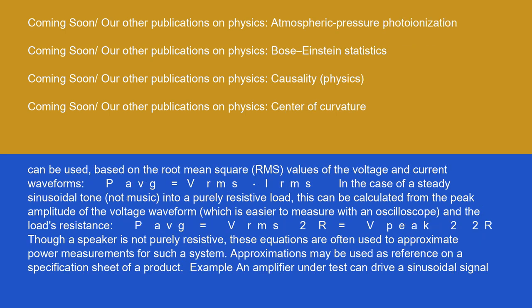A simpler equation can be used based on the root mean square (RMS) values of the voltage and current waveforms: P_AVG equals V_RMS times I_RMS. In the case of a steady sinusoidal tone, not music, into a purely resistive load, this can be calculated from the peak amplitude of the voltage waveform, which is easier to measure with an oscilloscope, and the load's resistance: P_AVG equals V_RMS squared over R equals V_PEAK squared over 2R.